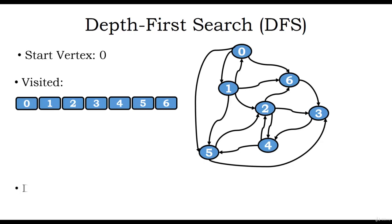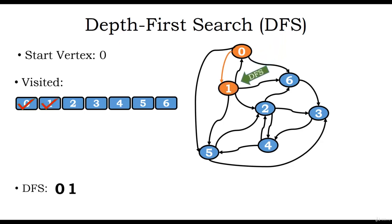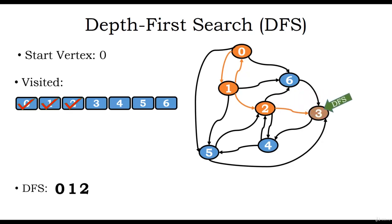We start the depth first search from vertex 0. Vertex 0 is visited and marked as visited in the list. From vertex 0 there is an edge to vertex 1, so we visit vertex 1 and mark it as visited. From vertex 1 we can visit vertex 0, which is already visited. We visit vertex 2 and mark it as visited. Then from vertex 2 we can visit vertex 3, which is not yet visited, so we visit vertex 3 and mark it as visited.